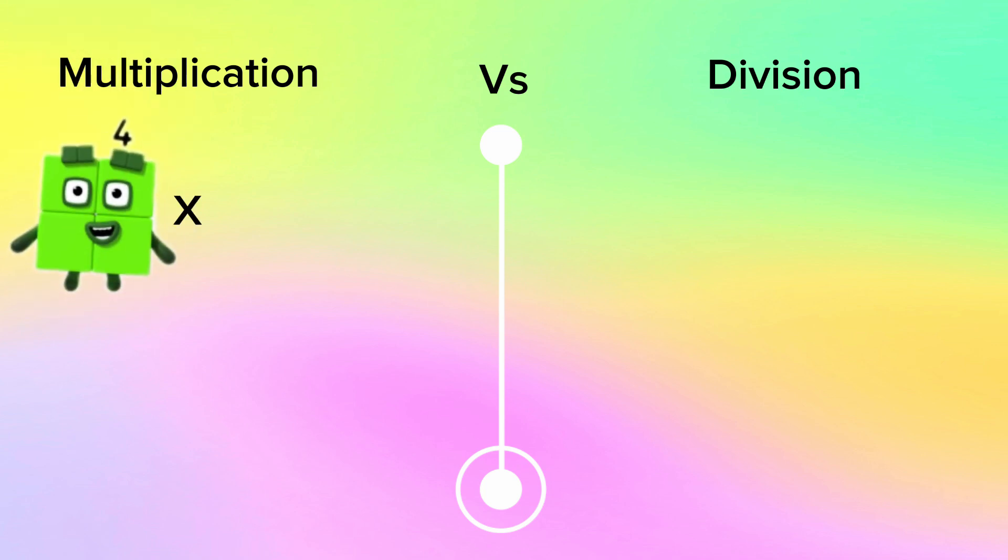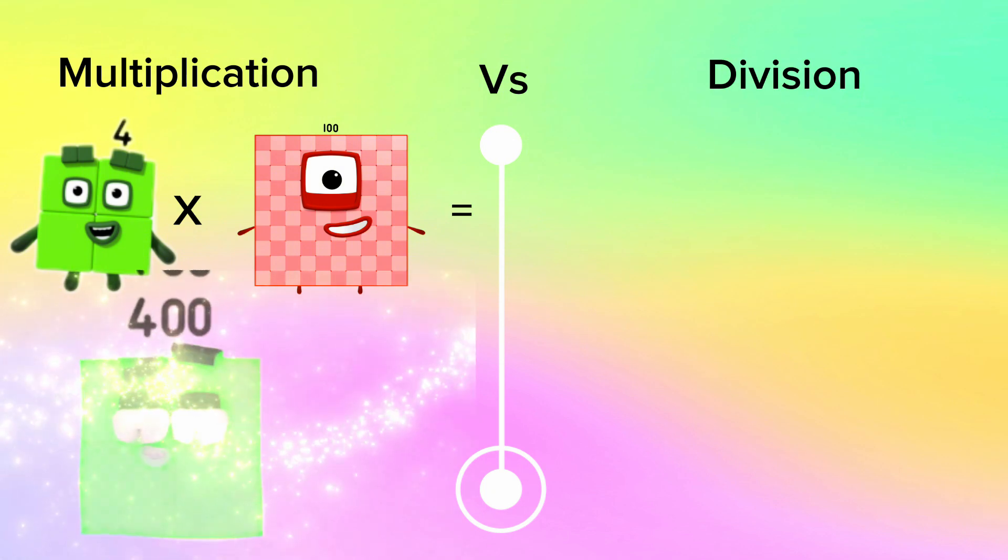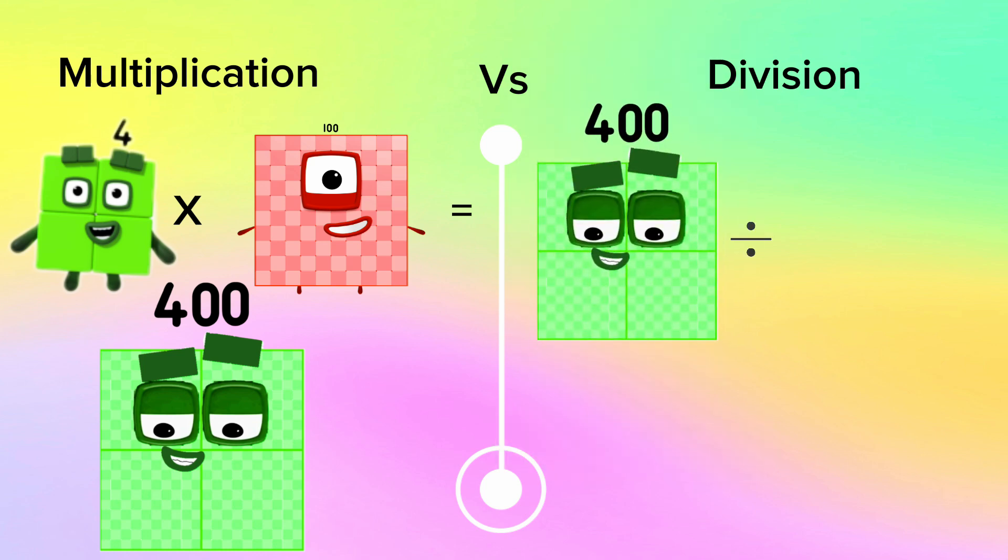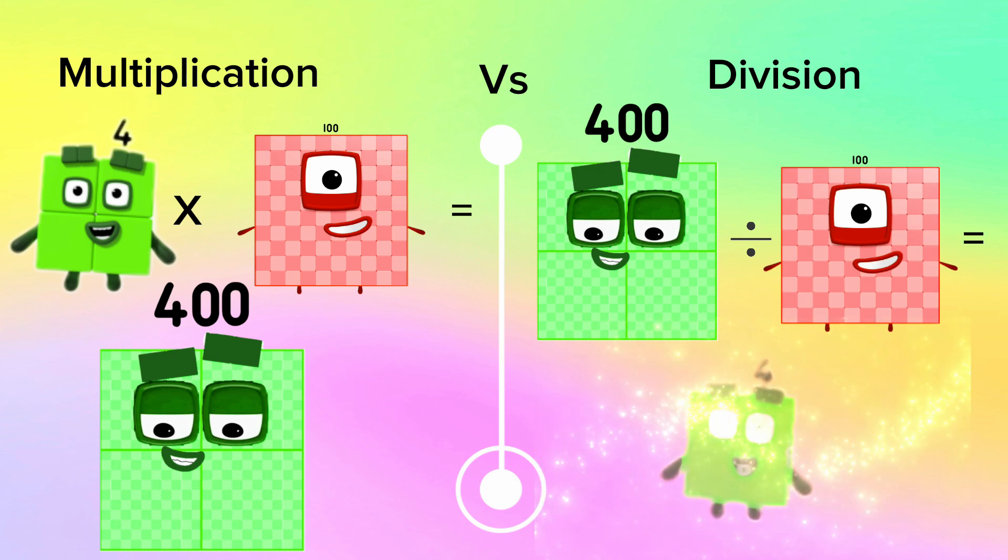4 multiplied by 100 is equals to 400. And now in division, let's try 400 divided by 100 is equals to 4.